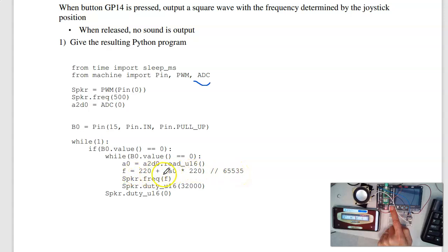To get the frequency, if the voltage is 0 I want to get 220 Hz. If it's maxed out at 65,000, I want to get 440 Hz. So there's my curve fit, goes from 220 to 440.